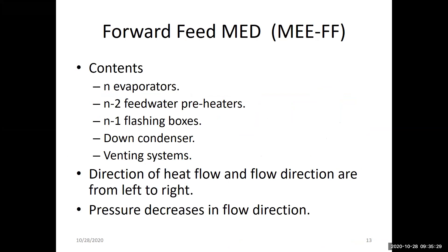For the model, we may not get to it today due to time, but essentially for N effects we have N evaporators, N-2 feed water heaters, N-1 flash boxes, one condenser for the last effect's vapor, and a venting system to remove non-condensable gases. The venting system is always present in reality but doesn't contribute to calculations, which is why we don't include it in our sketches. Flow and heat always move from left to right in forward feed.